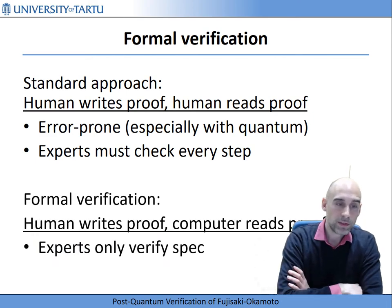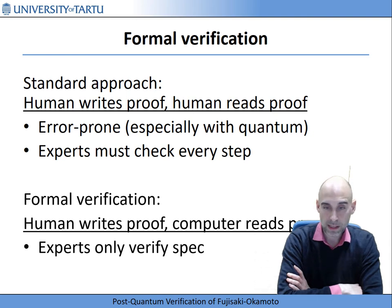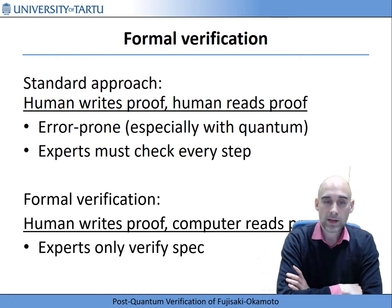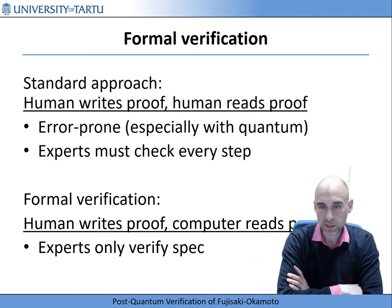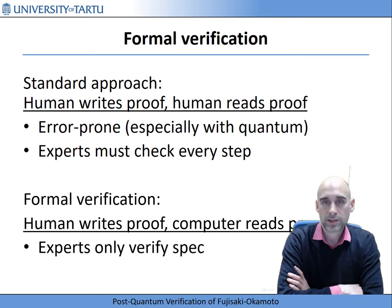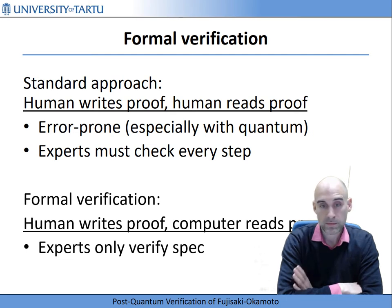On the other hand, we have formal verification. Here a human still writes the proof — at least in many cases when talking about cryptography — but now it is the computer that reads the proof. This has the big advantage that experts do not need to check every step. The experts now only need to verify that the specification — the security definitions and their formalization — are correct, but not every single proof step. Write once and it's done.